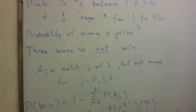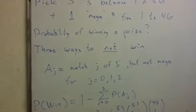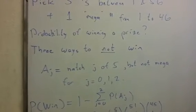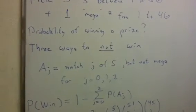So from that, we can see from the law of complements, the probability of winning is just going to be 1 minus the sum of the probabilities of these A sub j events, j equals 0 to 2.